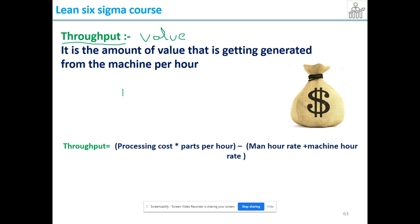We may have a turning machine, milling machine, or any machine that produces parts. Throughput is the amount of value that is getting generated from the machine per hour. It is not just processing cost.